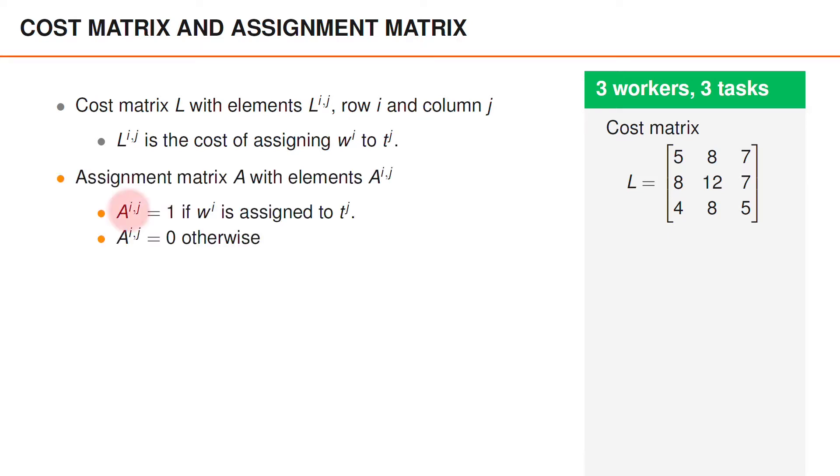The assignment matrix A has elements on row i and column j equal to 1 if worker i is assigned to task j and is equal to 0 otherwise. For example, if we assign worker 1 to task 2, worker 2 to task 3, and worker 3 to task 1, we get the following assignment matrix. And it's easy to verify that the elements equal to 1 indicate these assignments.